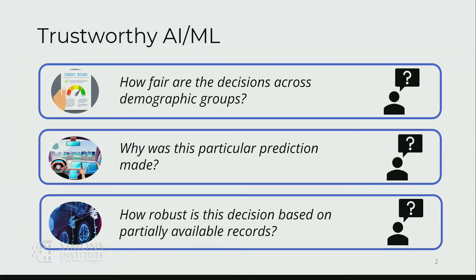For example, if you're given some AI system making decisions that are actually affecting people, how fair or how different are those decisions across different demographic groups? If you have a particular prediction model, you might ask why was that decision made—explain that decision. You could also ask, if you're making medical diagnosis with partially available records, how robust are these decisions?